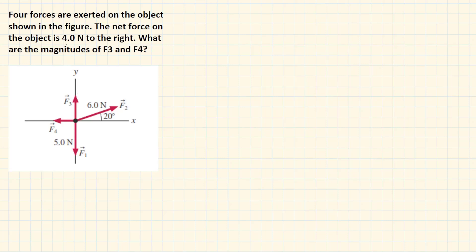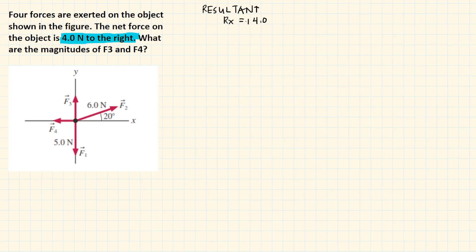What is given here is the resultant. The resultant is 4.0 newtons to the right. This means that the resultant is purely in the x-direction — there is no y-component. So Rx equals positive 4.0 newtons, and Ry equals zero. We do not have any component in the y-direction.